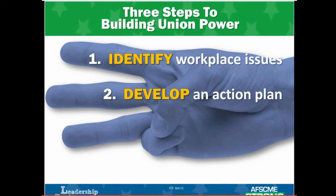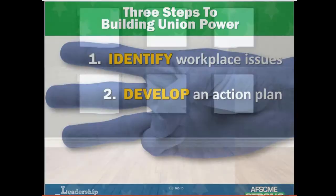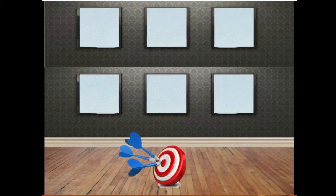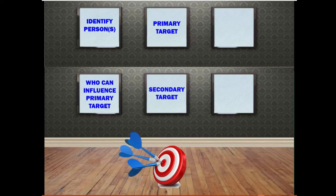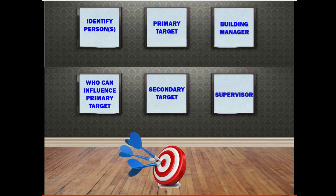Now let's develop a strategy to move the boss to fix the problem. The first part of developing an action plan is to identify the person or persons who can fix the problem — we call that the primary target. Avoid making large groups such as boards or entire institutions your target, as that blurs your focus. A secondary target is someone who can influence or compel your primary target to act — this could be above your primary target, like their boss, or below them, like a respected colleague. In the scenario we reviewed, the building manager might be the primary target, and the department supervisor a secondary target.